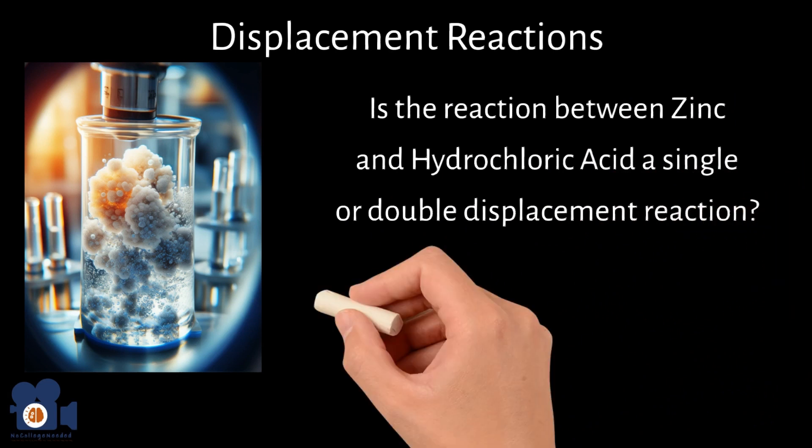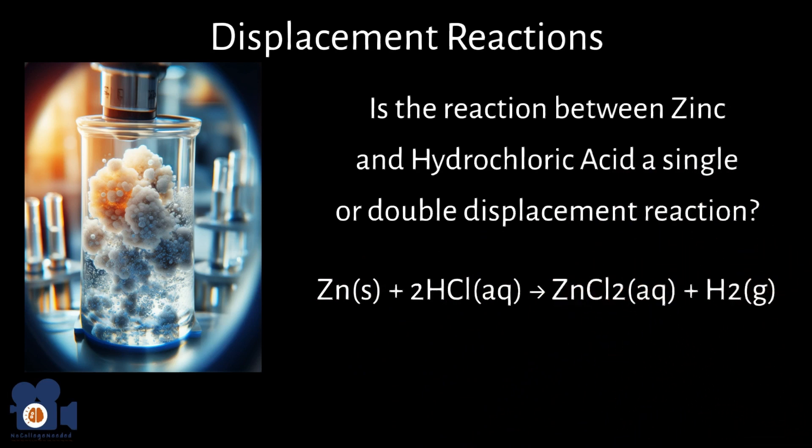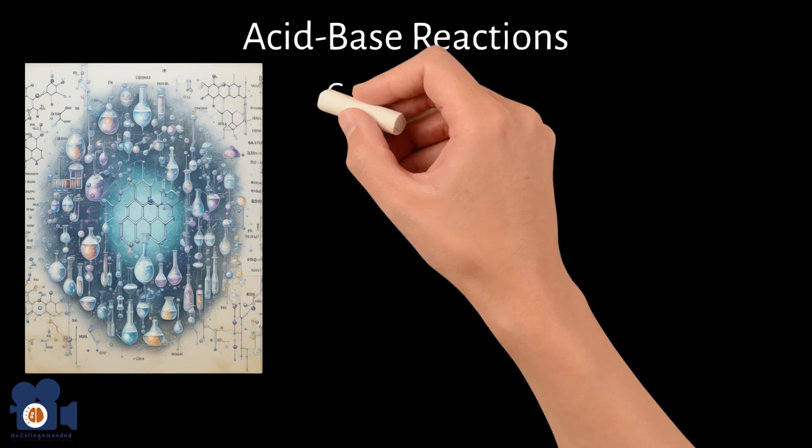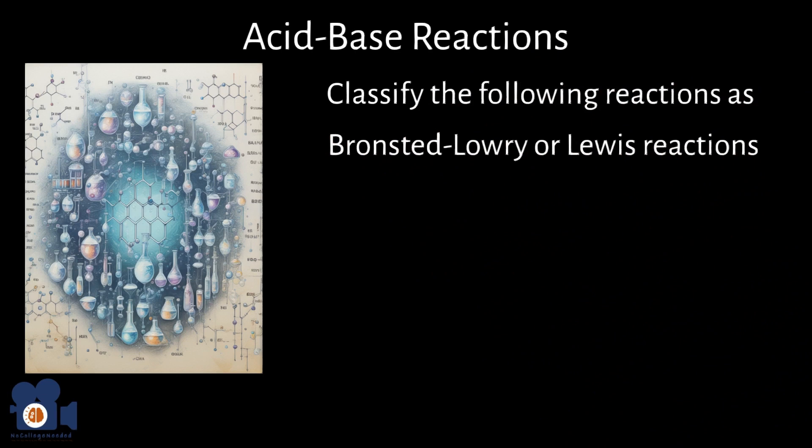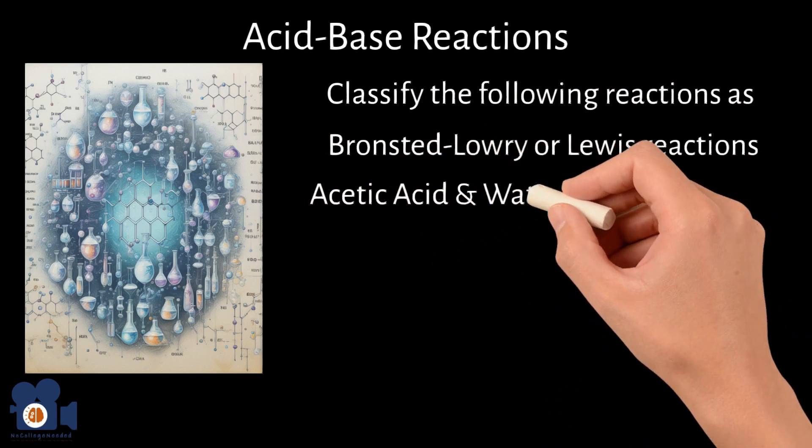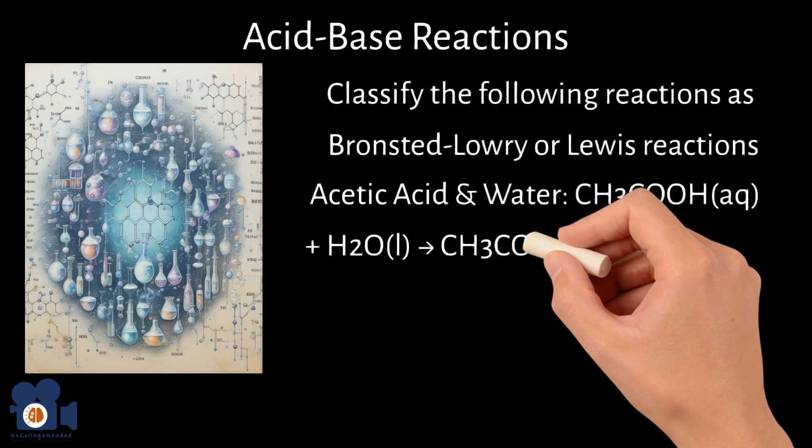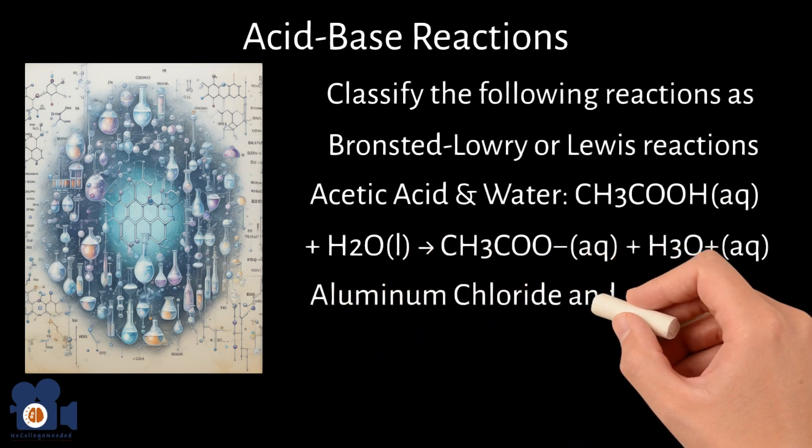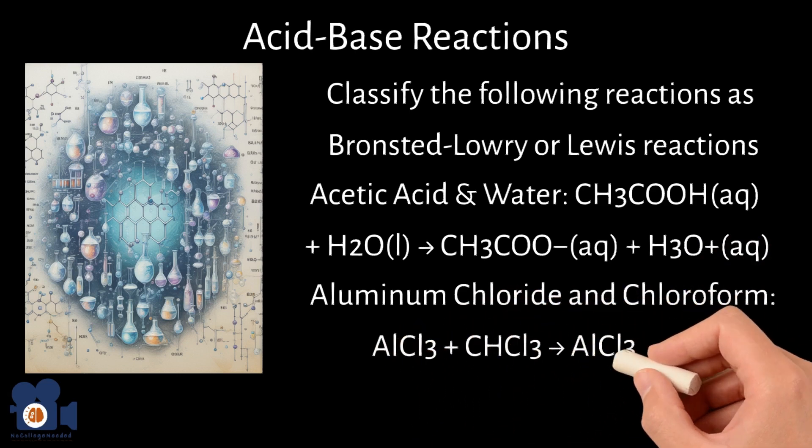The reaction looks like Zn plus 2HCl going to ZnCl2 plus H2. Unit 4.3 goes over acid-base reactions and the differences between Bronsted-Lowry and Lewis reactions. Classify the following reactions as strictly Bronsted-Lowry or Lewis reactions. Acetic acid in water, CH3COOH plus H2O going to CH3COO- plus H3O+. Aluminum chloride and chloroform, AlCl3 plus CHCl3 going to AlCl3CHCl3.